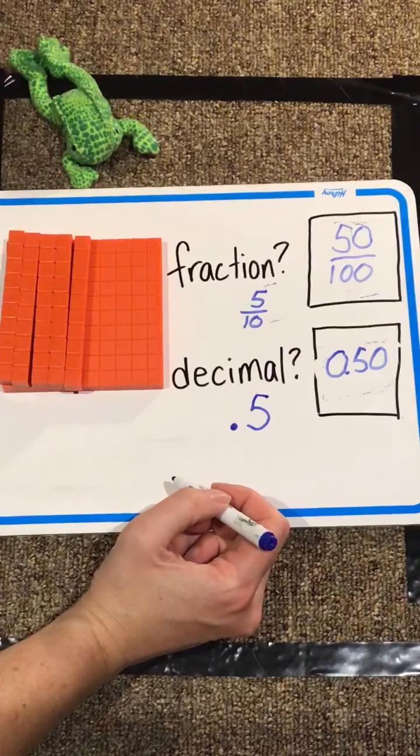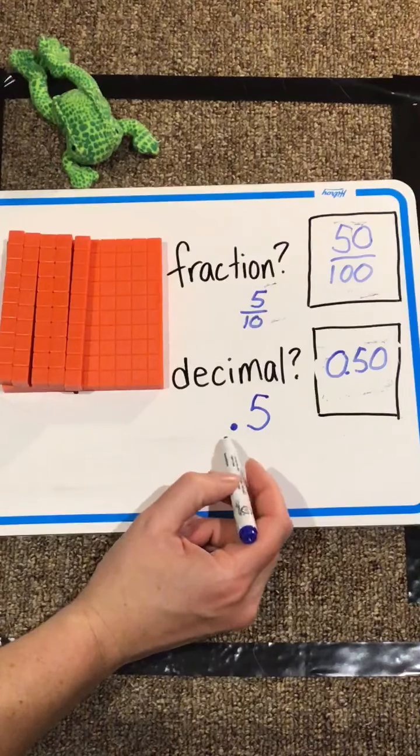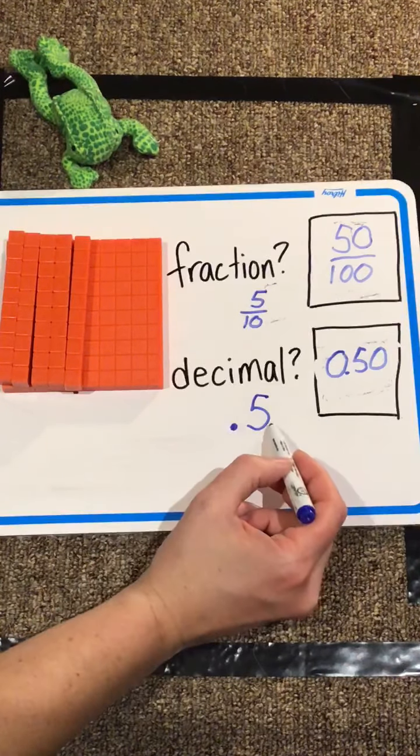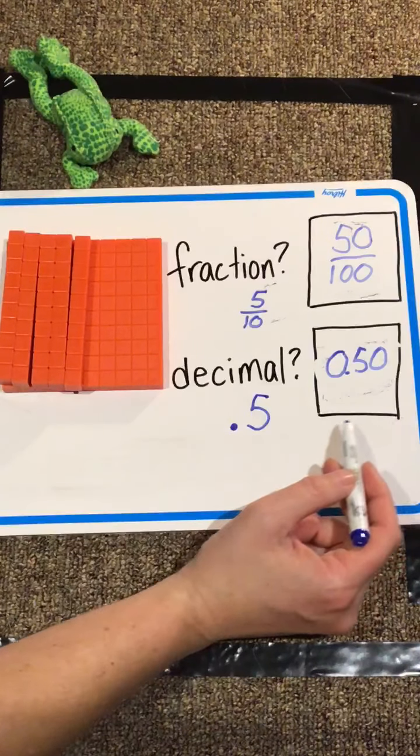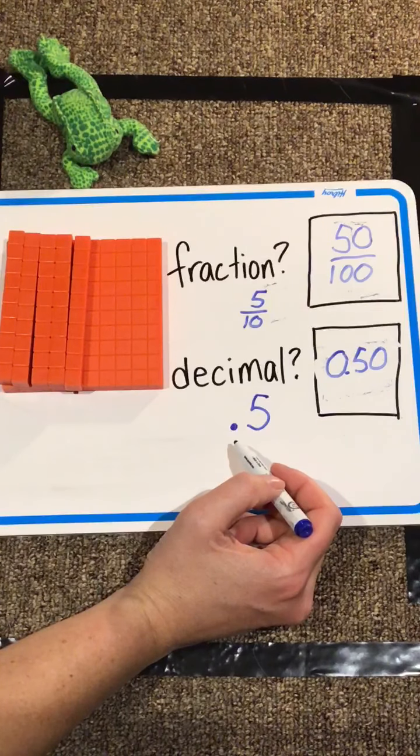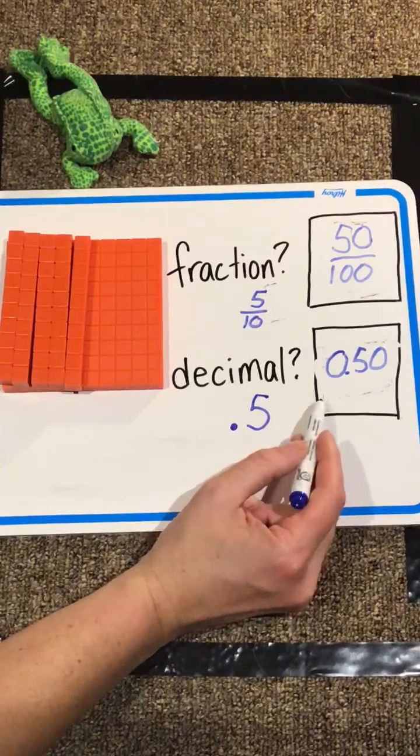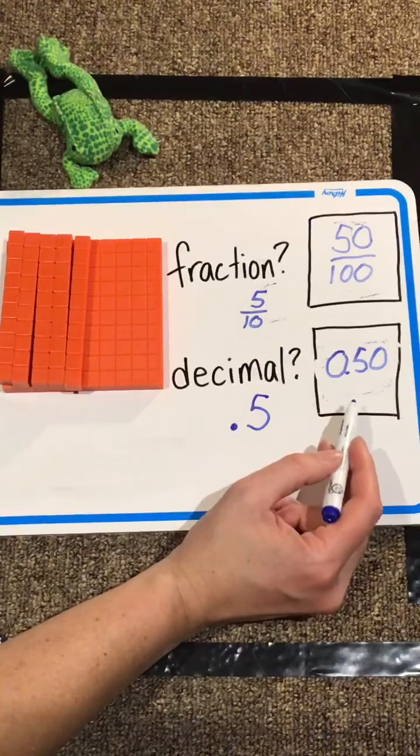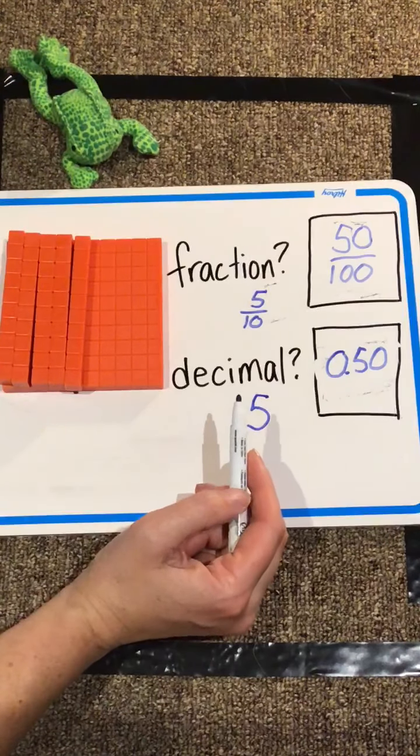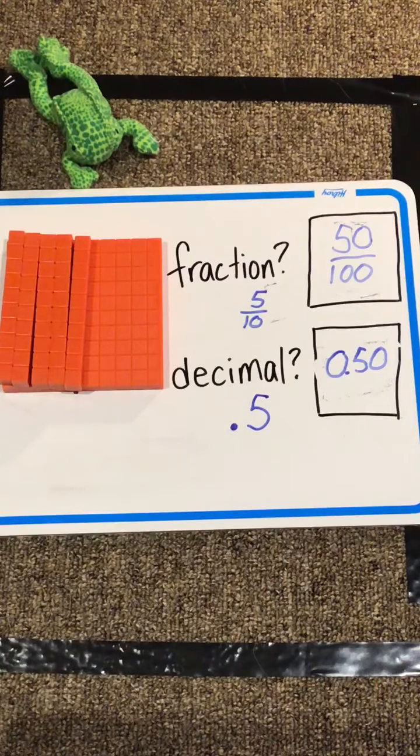And that would be correct, because any number, if there's nothing written to the left of the decimal point, it's assumed to be a zero, and it doesn't matter how many zeros we add on the right-hand side, it's not going to change the amount of stuff. Zero hundredths, zero thousandths, zero ten thousandths, it doesn't matter, it's all zeros, it's not going to change how much cake is there, or how much cake we covered up.